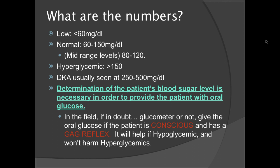Low blood glucose readings are less than 60 mg per deciliter of blood. The normal range is 60 to 150 mg per deciliter. The mid-range or ideal levels are 80 to 120. Hyperglycemic is considered greater than 150 mg per deciliter. However, we usually see DKA, or diabetic ketoacidosis, between the 250 to 500 mg per deciliter range. Diabetic patients who normally run high sometimes won't hit the ketoacidosis stage until well over 500, so you need to be aware of what your patient's normal blood sugar readings usually are.